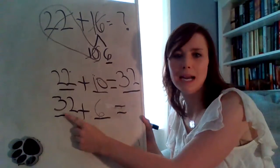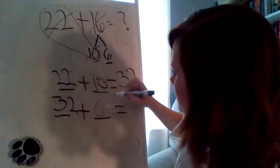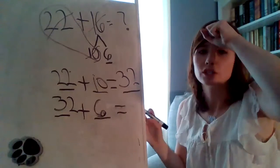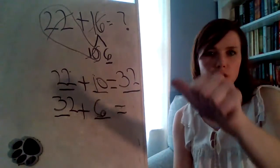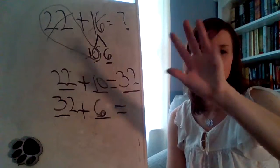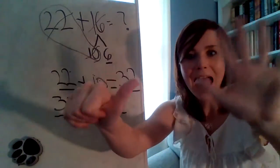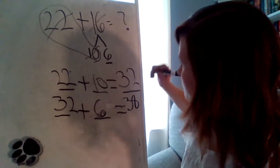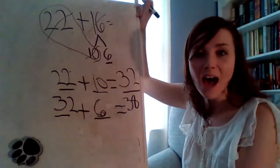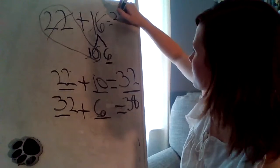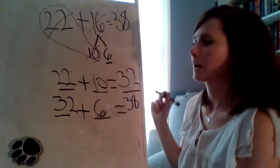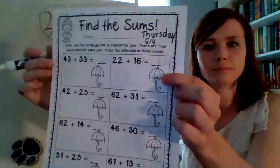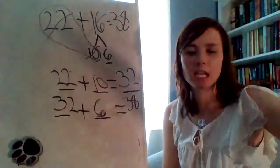32 plus 6. All right. Let's put 32 on our head and count up 6. Okay. Ready? 32. We're counting our mystery sum. 38. Awesome job. And you can fill that right in there. 38.